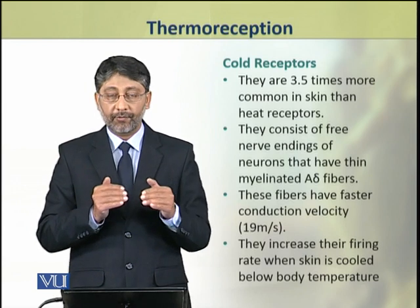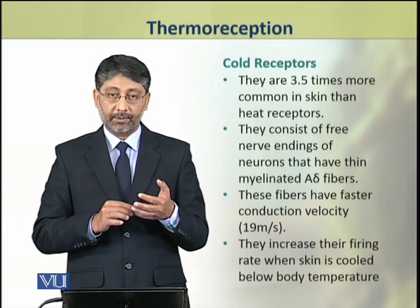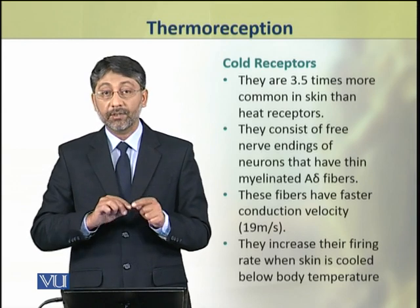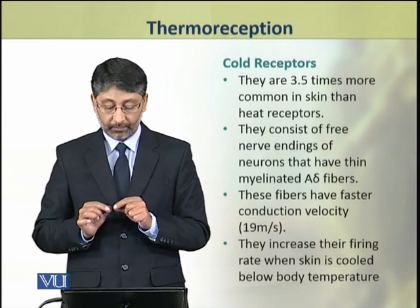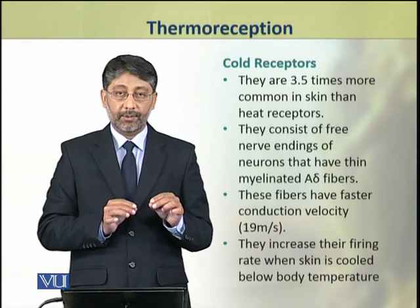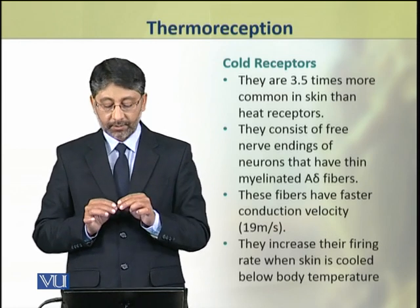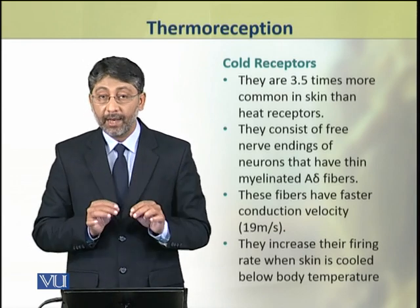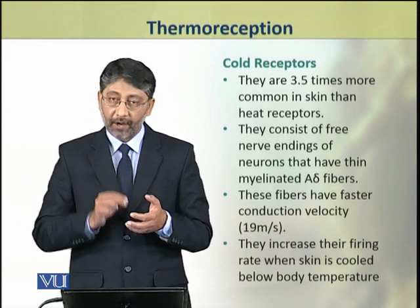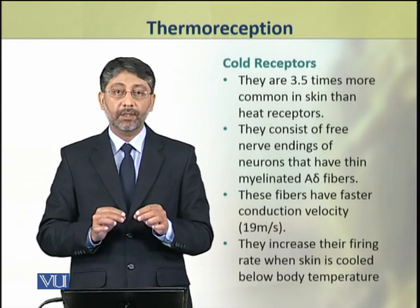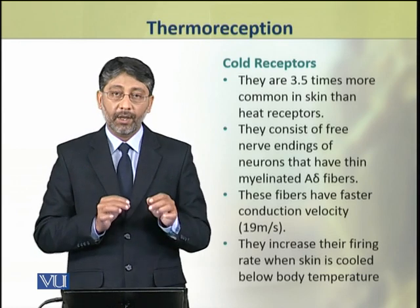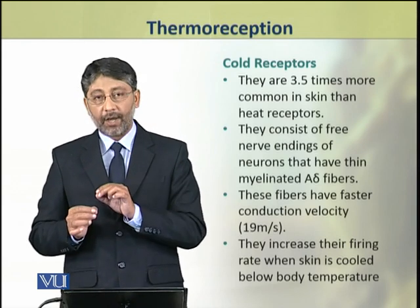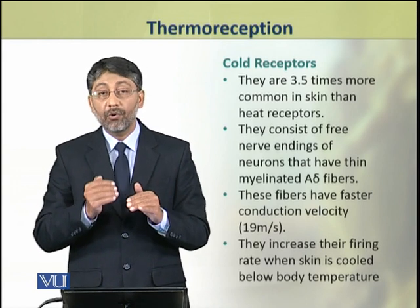The cold receptors are 3.5 times more numerous in the skin compared to the warmth receptors. Cold receptors consist of free nerve endings of neurons which have thin myelinated A-sigma fibers. These fibers have a faster conduction speed of about 19 meters per second and increase their firing rate when the skin is cooled below body temperature.